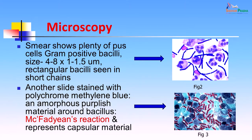On microscopy, the smear showed plenty of pus cells and Gram-positive bacilli about 4 to 8 microns in size by 1 to 1.5 microns — fairly large rectangular bacilli seen in chains with a halo of a capsule around them. This picture shows the Gram-positive bacilli present in chains and the pus cells. They give a halo of a capsule, but the capsule is not very clearly seen.